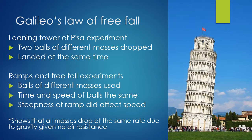Galileo's law of freefall: Galileo figured out the rate of gravity, though at the time he didn't call it gravity. Some people believe he went to the top of the Leaning Tower of Pisa and dropped two balls of different masses, observing them hitting the ground at the same time. But as the father of the scientific method, he would have run a series of experiments, analyzed data, and gone through all the steps to turn this hypothesis into a theory.